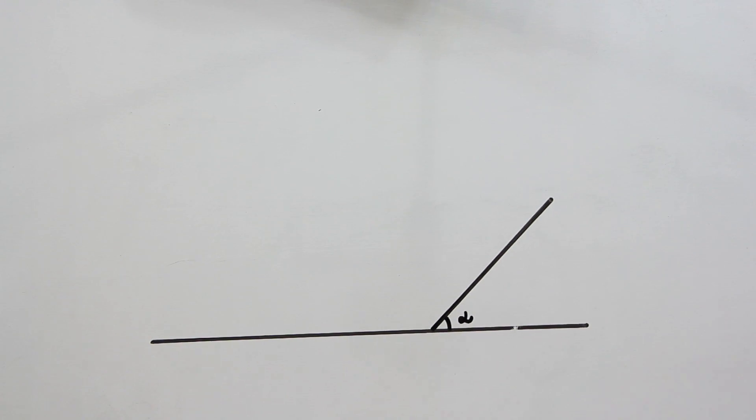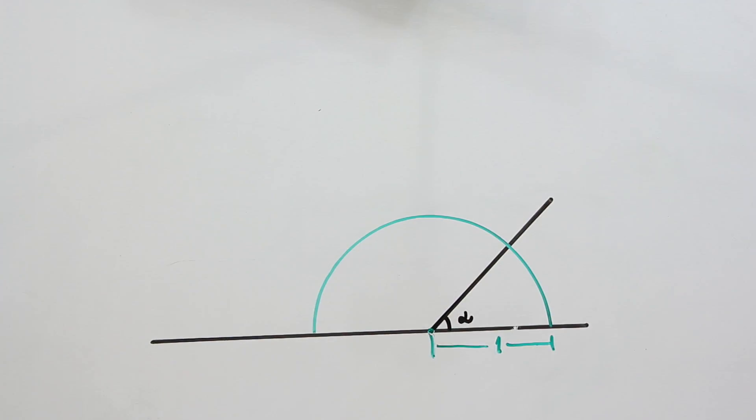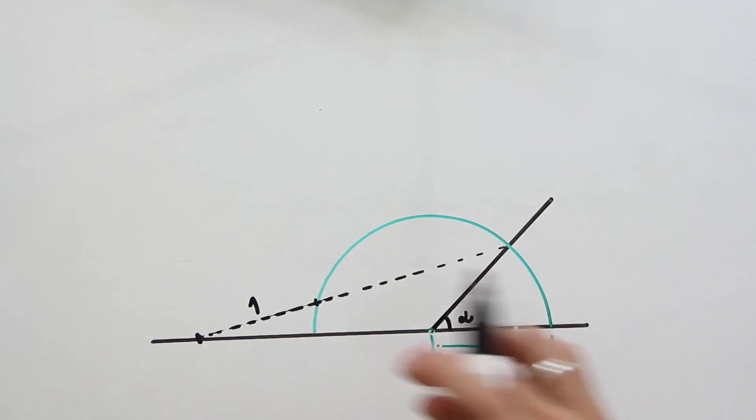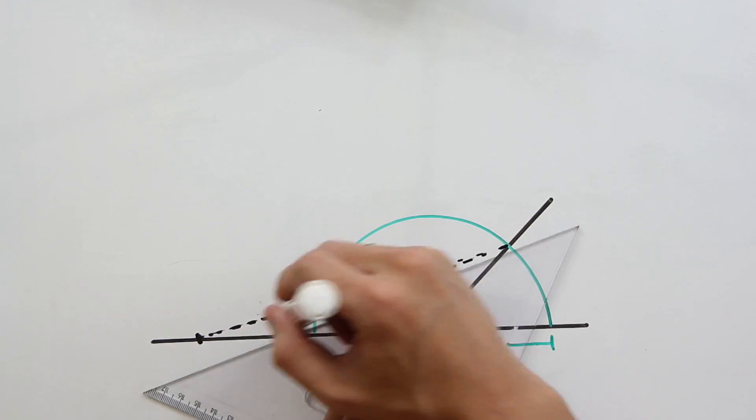Make a circle with radius one. Now make a line making this distance here equals one. Now this line is bigger than one, so let's make a smaller one.